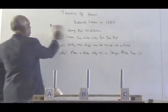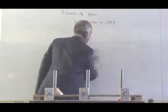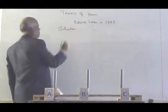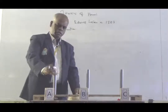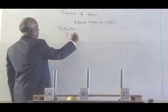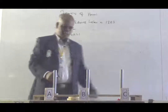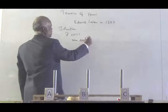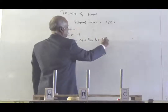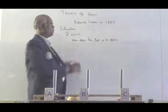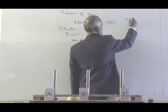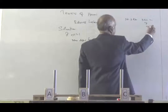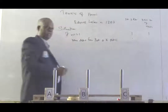Now we have defined the problem. Let's see the solution. We assume there is only one disc in post A, so n equals 1. The easiest solution is to move disc 1 from post A to post C. Keeping a table of number of discs versus minimum number of moves: if there is only one disc, there is only one move.